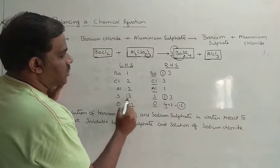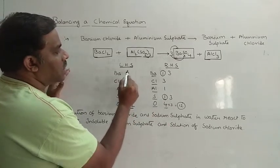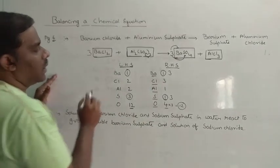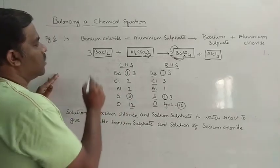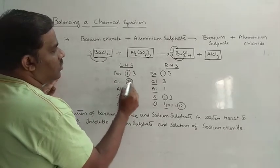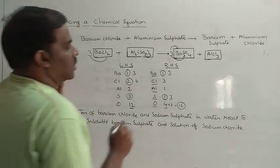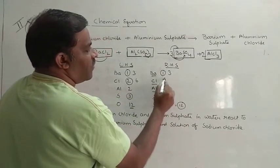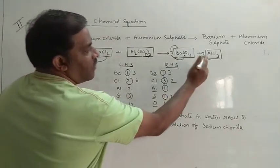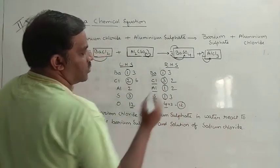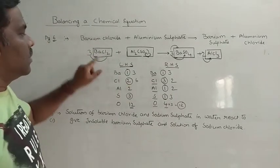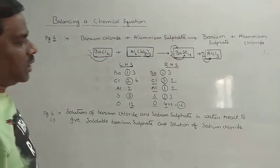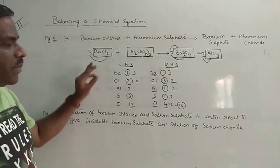So in order to get the number of chlorines balanced, we write a 2 in front of AlCl3, giving 2 times 3 equals 6 chlorines. The number of aluminiums also changes to 2. So the balanced equation is: 3BaCl2 plus Al2(SO4)3 gives rise to 3BaSO4 plus 2AlCl3. This is a simple way of balancing a particular equation.